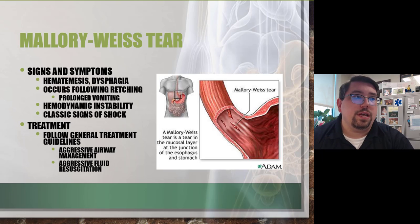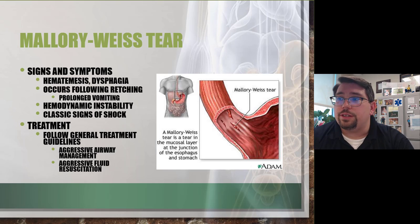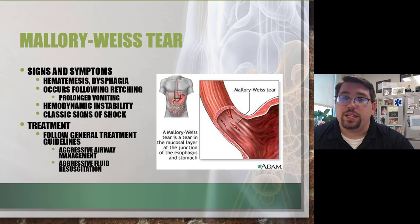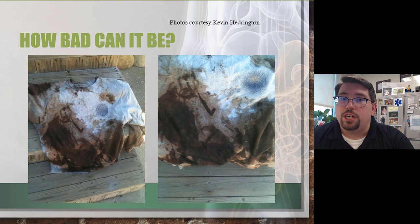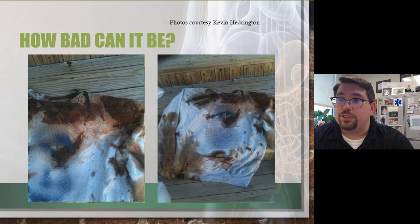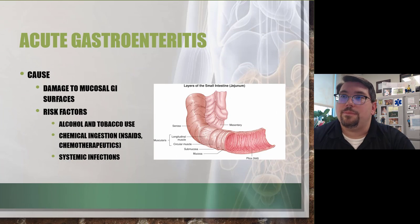A Mallory Weiss tear is where we get a tear in the mucosal layer of the esophagus, caused by prolonged or excessive vomiting. Someone with the stomach flu can start vomiting copious amounts of blood because of a tear in the esophageal mucosal lining. Airway management and aggressive fluid therapy are important. One patient had retching and vomiting, producing a significant amount of blood from a small Mallory Weiss tear that was surgically corrected.